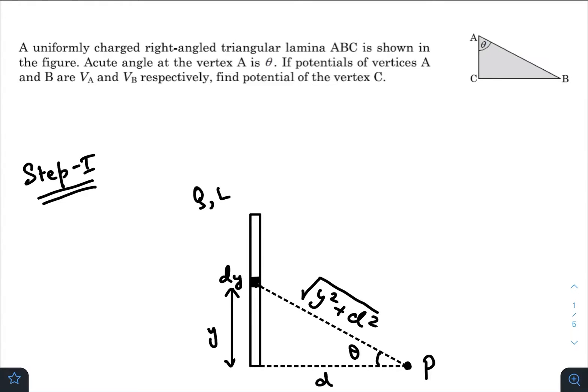Hey, what is up everyone? I hope all of you are doing great. In today's question, we have a uniformly charged right-angled triangular lamina ABC shown in the figure. The acute angle at vertex A is theta. If the potentials of vertices A and B are V_A and V_B respectively, find the potential of vertex C. So in the question, we need to write V_C as a function of V_A and V_B.